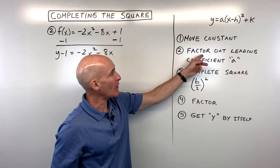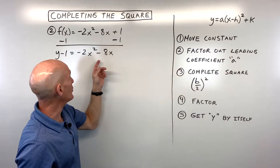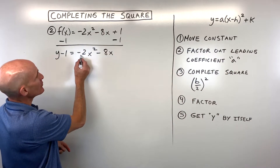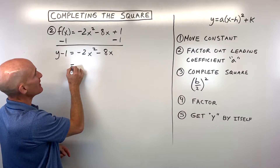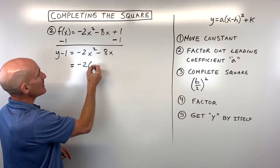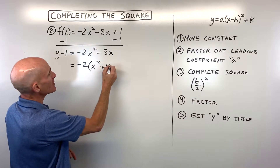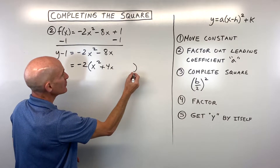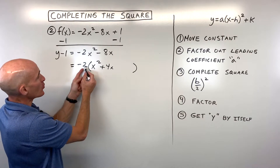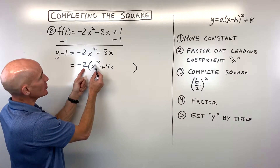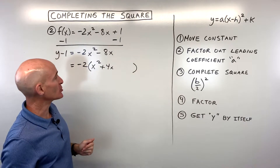Step two: factor out the leading coefficient, the a value. In this case the number in front of x squared is negative two. Factoring that negative two out leaves us with x squared plus four x, and we leave a little space for completing the square. You can check your work by distributing to get back negative two x squared minus eight x.